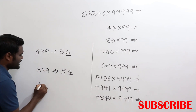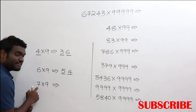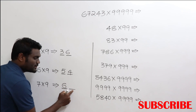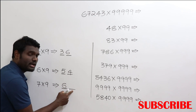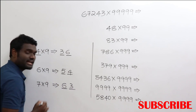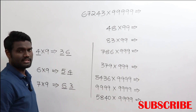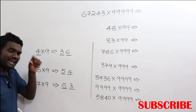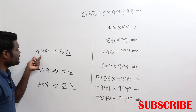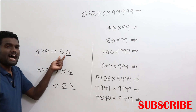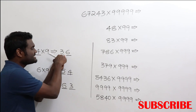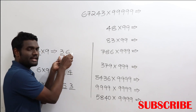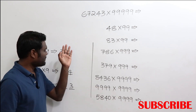Another example: 7 times 9. Seven, one less, will be 6. For 6, how much more do I need to add to get 9? If I add 3 more I can get 9. So 7 times 9 is 63. The logic is simple: whatever number you are multiplying with 9, 99, or triple nine — first do one less, then find how much more you need to add to get 9, and that gives you your answer.